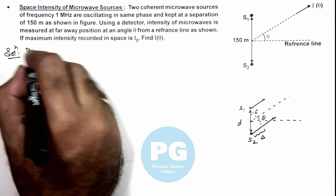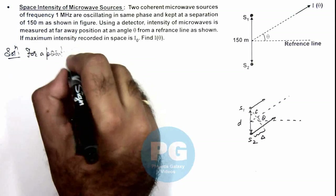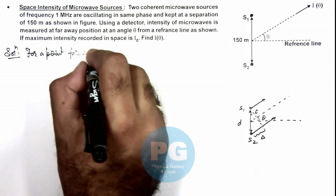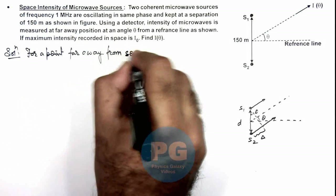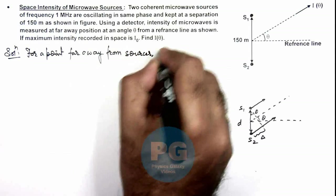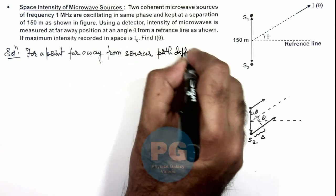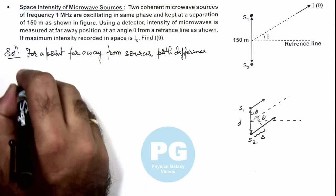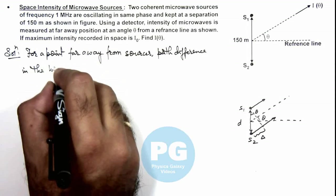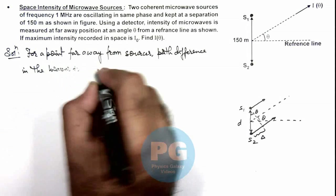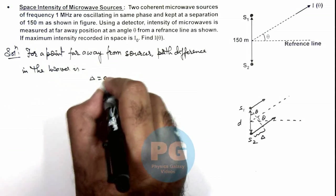And here we can calculate in solution that for a point far away from sources, path difference in the two waves is - this can be given as delta and this must be d sin theta.